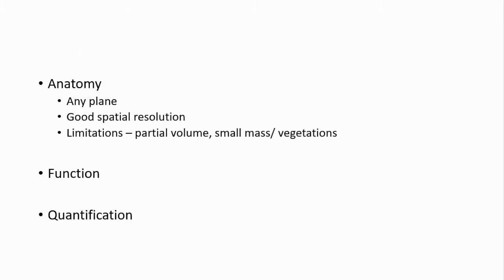Each case of valvular heart disease needs to be assessed for anatomy, function, and quantification. Cardiac MRI has the advantage that we can scan in any plane, which is especially helpful for right-sided valvular heart lesions that might be difficult to assess on echocardiography. It provides anatomical information as good as transesophageal echocardiography. However, a limitation is that each slice of cardiac MRI is at least six to eight millimeters thick, which may cause partial volume artifact especially in the in-plane view of the valve, since valves are only one to two millimeters thin.